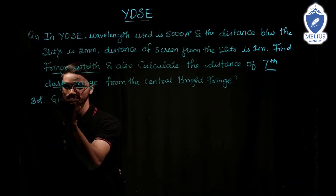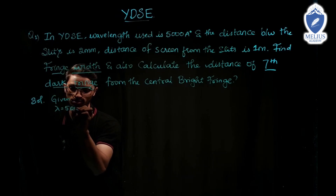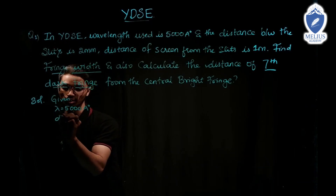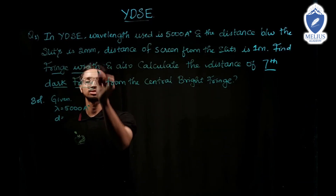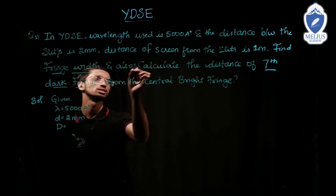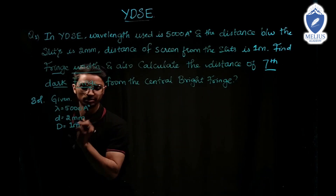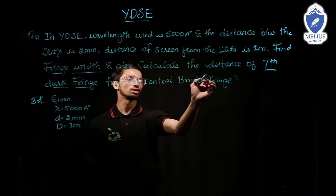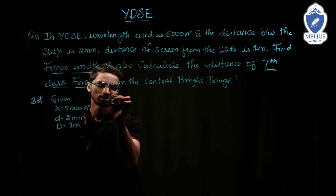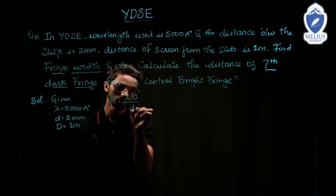The given data: lambda is equal to 5000 Angstrom, small d is equal to 2 mm (distance between the slits), and capital D is equal to 1 meter (distance of screen from the slits). The formula for fringe width is: beta is equal to lambda times capital D divided by small d.